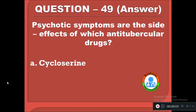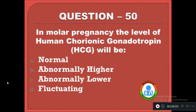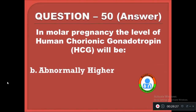Question 50: In molar pregnancy, the level of human chorionic gonadotropin (hCG) will be — option A: normal, B: abnormally higher, C: abnormally lower, D: fluctuating. The correct answer is B, the hCG level in a patient with molar pregnancy will be abnormally higher.